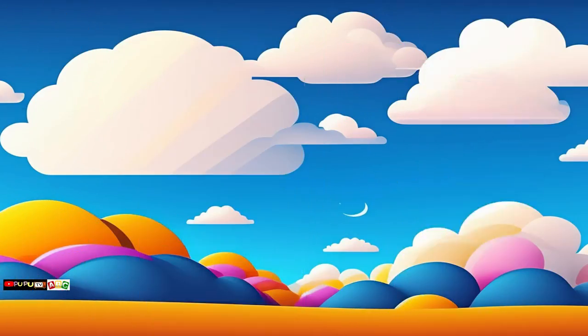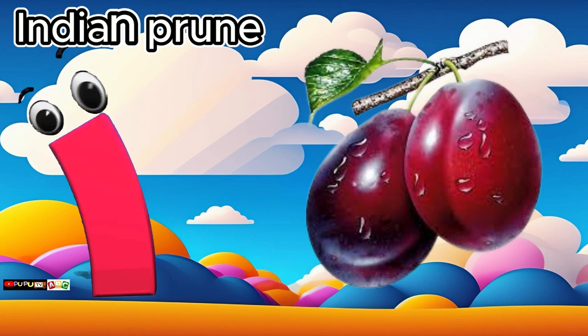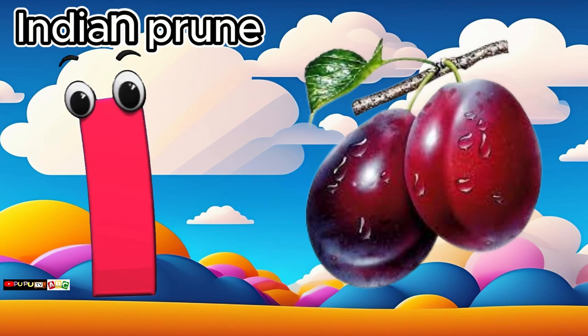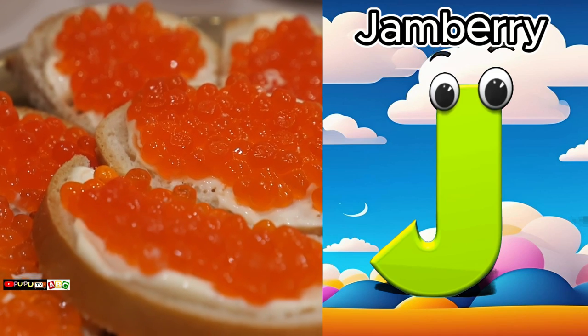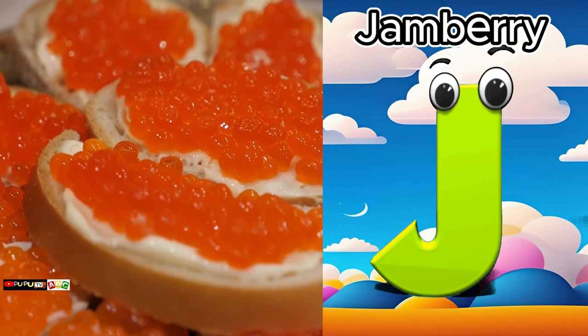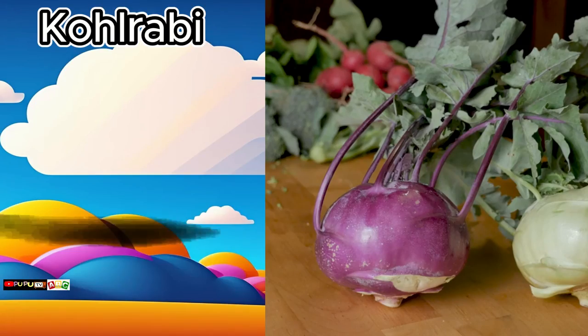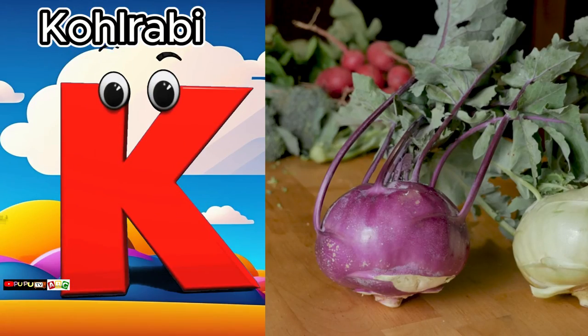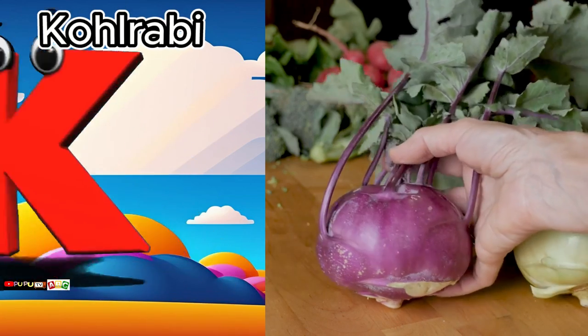I is for Indian prune. I, I, Indian prune. J is for jamberry. J, J, jamberry. K is for kohlrabi. K, K, kohlrabi.